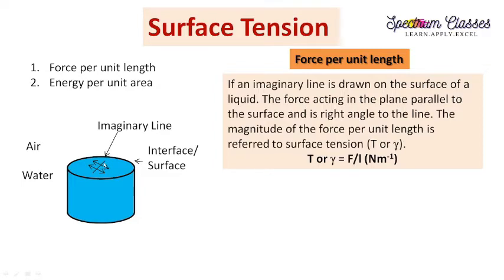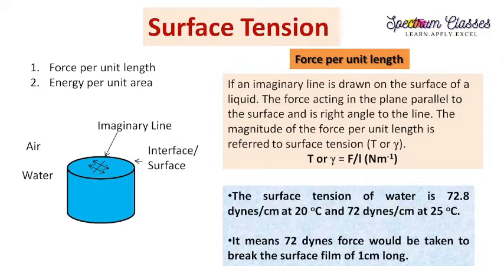The unit of force per unit length is newton per meter in SI, and dynes per centimeter in CGS. In CGS, if this is a one-centimeter line, the magnitude of the force applied on this surface equals the surface tension. Surface tension is represented by capital T, and sometimes by gamma — whichever is given in your textbook. The formula is T = F/L, with units newton per meter (SI) or dynes per centimeter (CGS).